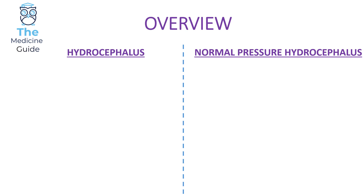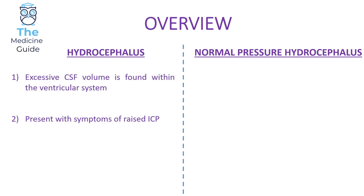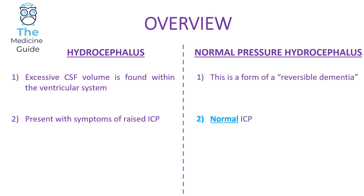Let's begin with hydrocephalus. The two key points to remember are: these patients will have excessive CSF volume within the ventricular system of the brain, and they typically present with symptoms of raised intracranial pressure. In normal pressure hydrocephalus, patients have reduced CSF absorption at the arachnoid villi, presenting with reversible dementia, and crucially, a normal intracranial pressure.